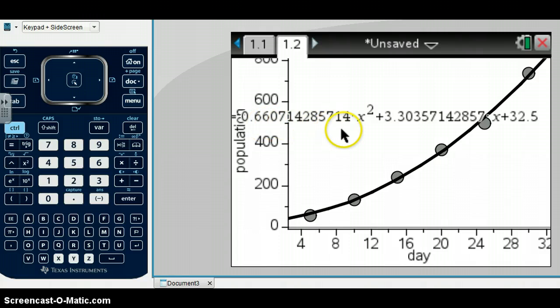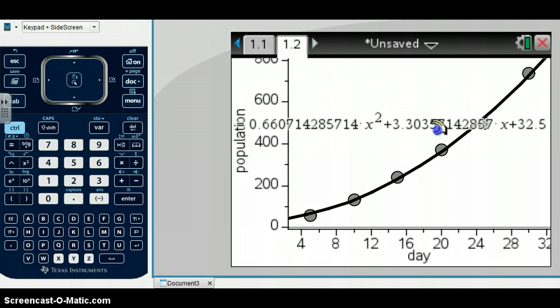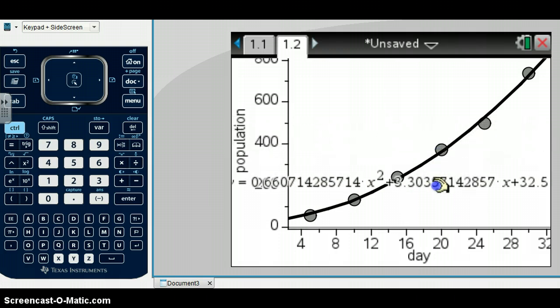We don't have to write all the decimals, but we can write 0.66x squared plus 3.30x plus 32.5. And that will work out really well, and we'll have our equation.